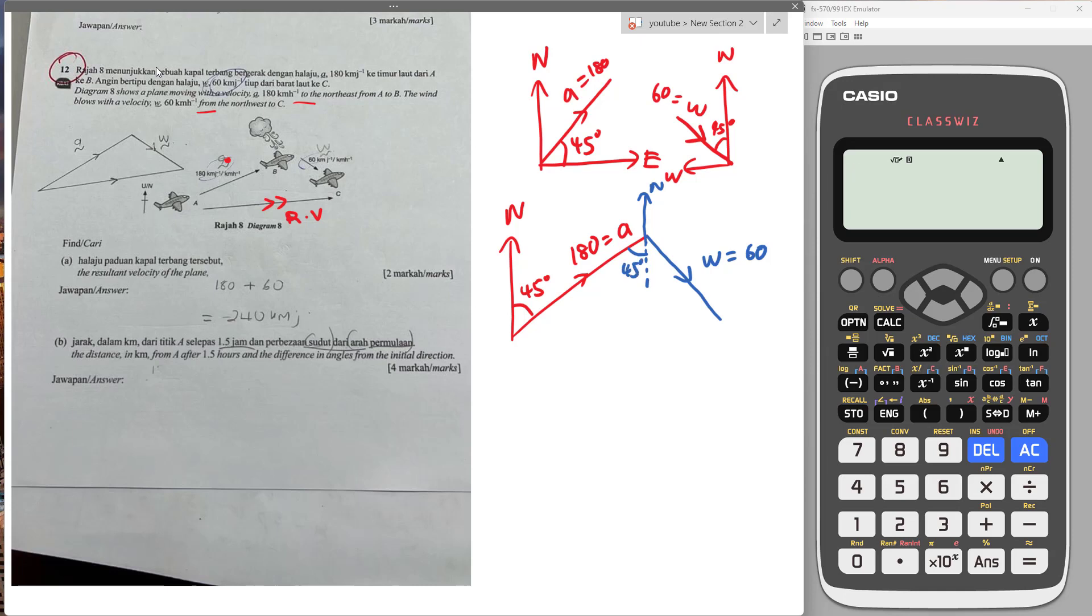We also know that if this is 45, and if I go like this, here will be 45 as well. So if I go like this, here is 45, then this one will be 45 as well. Then it will be 90 degrees. Now I can find the resultant velocity of the plane, which is this one. And this is 90 degrees, right?